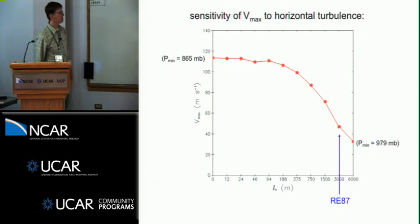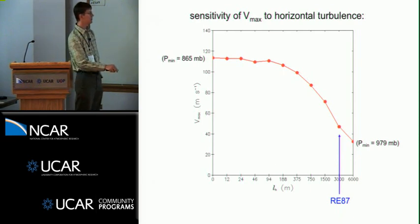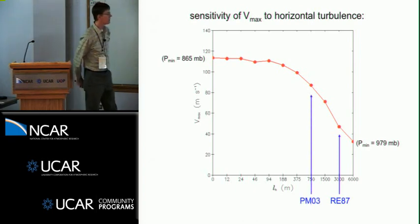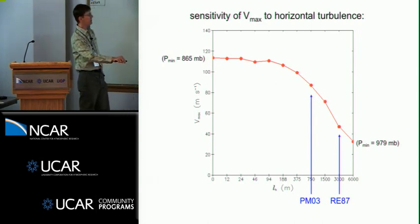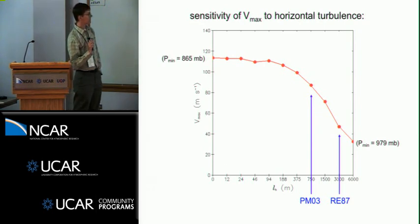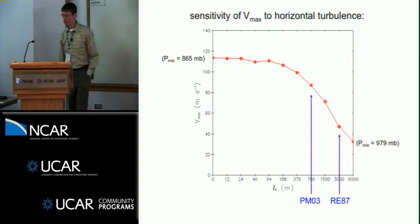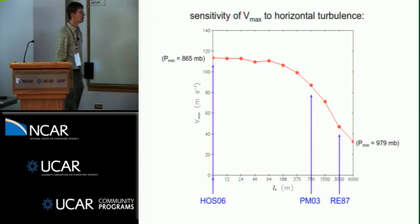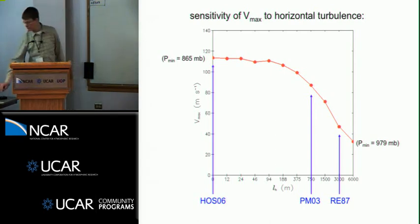One thing I would like to point out is we think this explains a lot of previous studies. This Rotuno and Emanuel 1987 article, they used L sub H of 3000 and they compared to observations and theory and they found great correspondence. But Persing and Montgomery in a more recent study used the same axisymmetric model but they changed L sub H and they found these unnaturally large azimuthal velocities. We think how to explain those results has everything to do with this horizontal diffusion rather than the mechanisms they discussed in their article. And even more recently, Housman et al had no turbulence model in the radial direction in their model, so they essentially had an L sub H of 0, and they, like us, see tangential velocity well in excess of 100 meters per second. So this topic is not just focused on this particular model, it's in other numerical models, it's in other published studies in recent years.